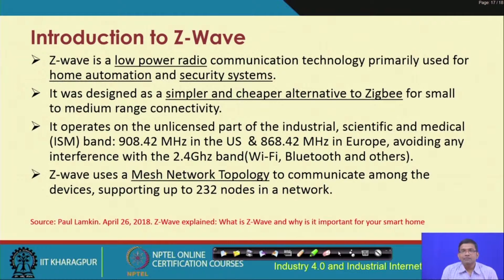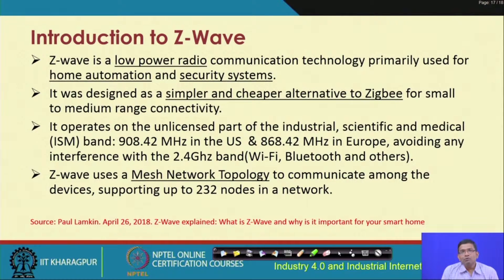Home automation is very important nowadays because people are talking about smart homes, and this is where you can adopt Z-Wave and devices that support it. It is not restricted to home automation alone; even for industrial applications you might find usefulness in this technology. Unlike ZigBee, Z-Wave is simpler and cheaper.